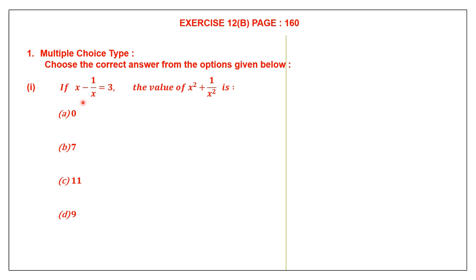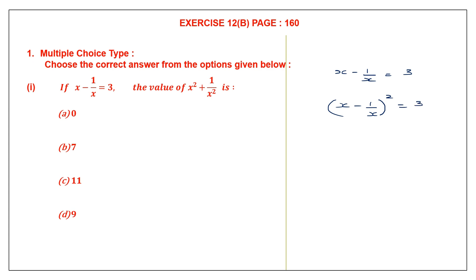We've been given that x minus 1 by x is equal to 3, and we have to find the value of x squared plus 1 by x squared. So that is x minus 1 by x equals 3. Now let's square this — if we square the left hand side, we have to square the right hand side also.